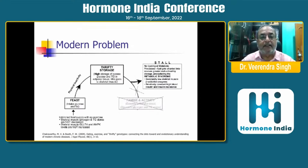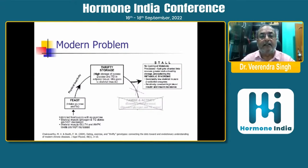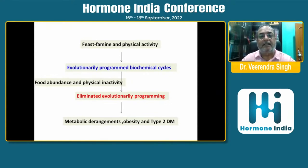In modern days, we have plenty of food and the least physical activity. We are stuck in the feast stage, and our genes have been tuned for storing. There is high storage of excess glucose and triglycerides in adipose tissues, little goes to skeletal muscles, and there is no famine-inactivity phase. Fuel shifts into an even greater and unhealthy storage, precipitating metabolic syndrome, constantly low skeletal muscle beta-oxidation enzymes, and relatively constant high insulin and insulin resistance. Food abundance and physical inactivity eliminated evolutionary programming, and obesity and type 2 diabetes were the results.